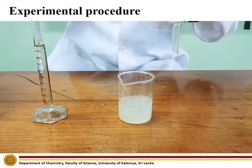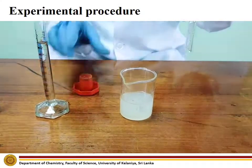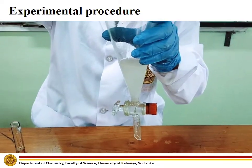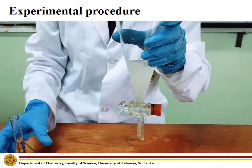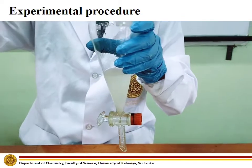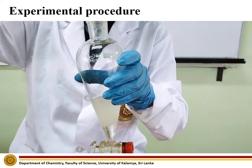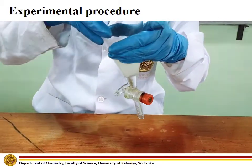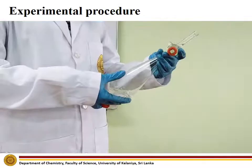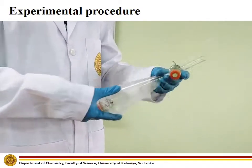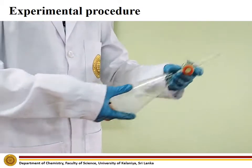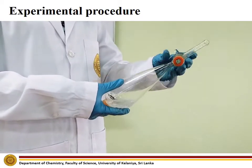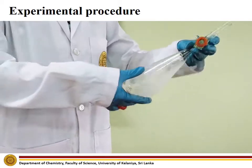Next, take a separating funnel and transfer all of the distillate into the separating funnel. Then add 10 ml of dichloromethane. Shake the contents of the separating funnel. While shaking, release the pressure that builds up in the separating funnel like this. Continue shaking for about 5 minutes.